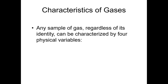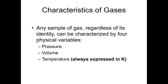Any sample of a gas — regardless of what that gas is, whether it's nitrogen, oxygen, carbon dioxide, or methane — is going to be characterized by four physical variables and obey laws with regard to these variables. Those four physical variables are pressure, volume (generally measured in liters), temperature (always expressed in kelvins, because the laws governing gas behavior use the absolute temperature scale), and the amount of substance expressed in moles.